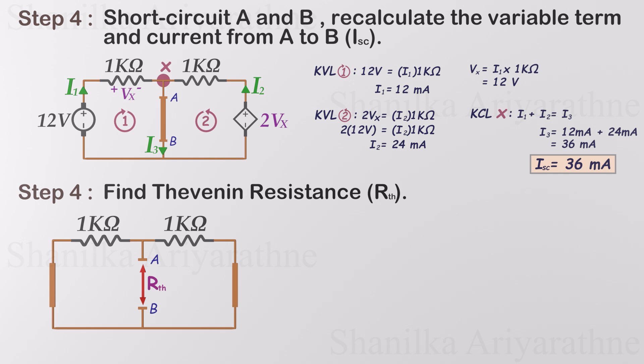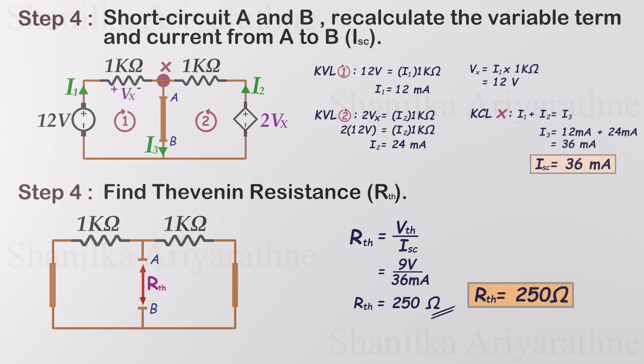In circuits with both independent and dependent sources, the Thevenin resistance is calculated by dividing the Thevenin voltage by the short circuit current. So the Thevenin resistance is 250 ohms.